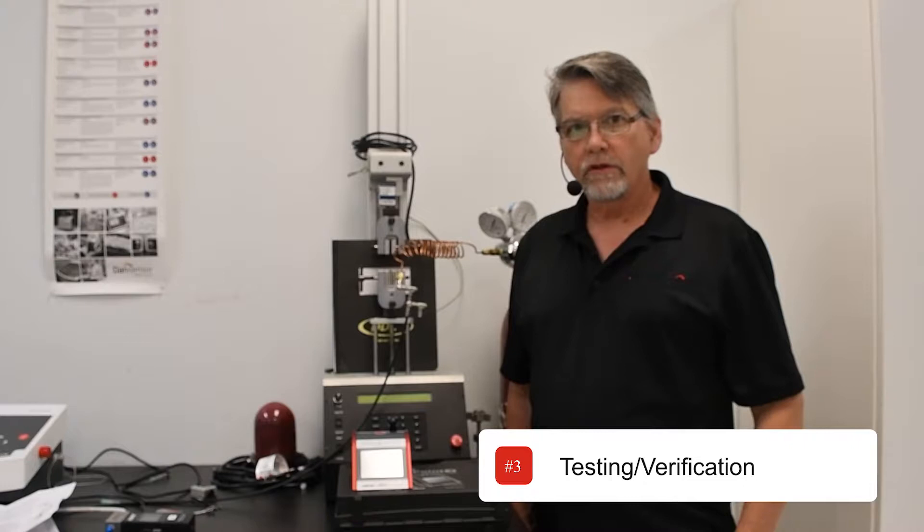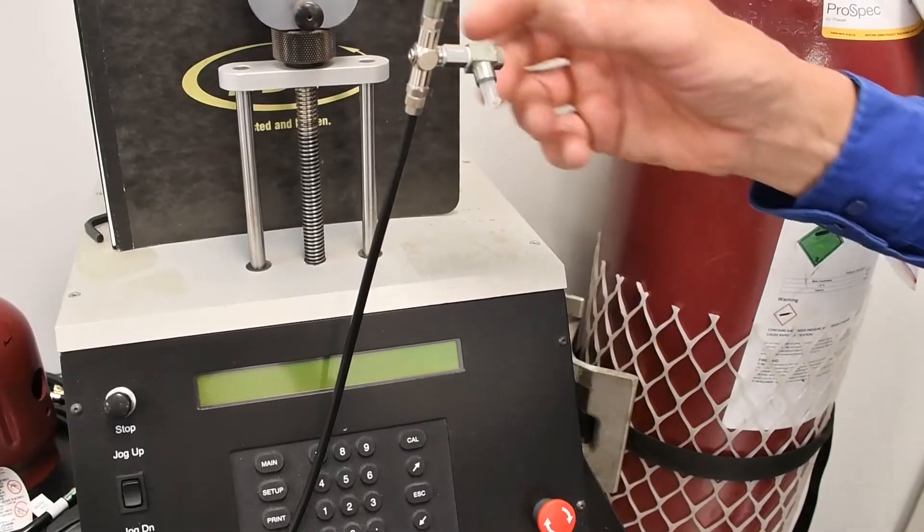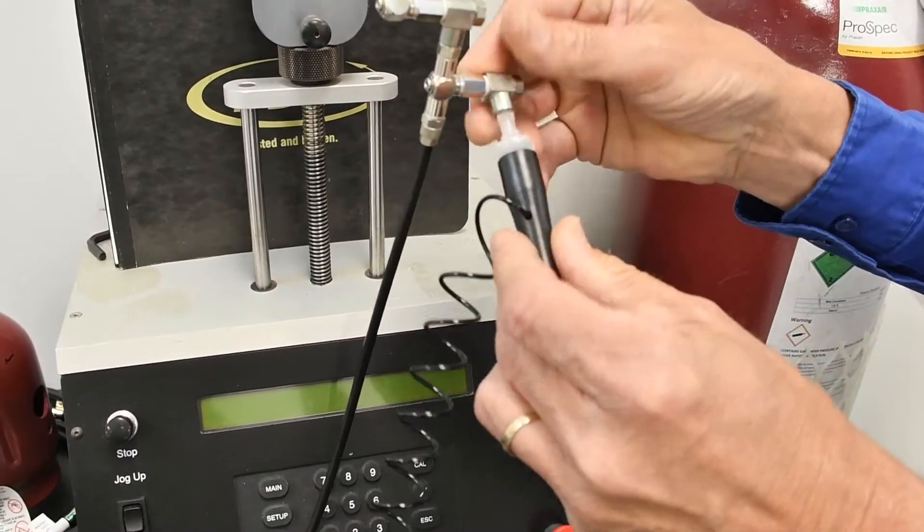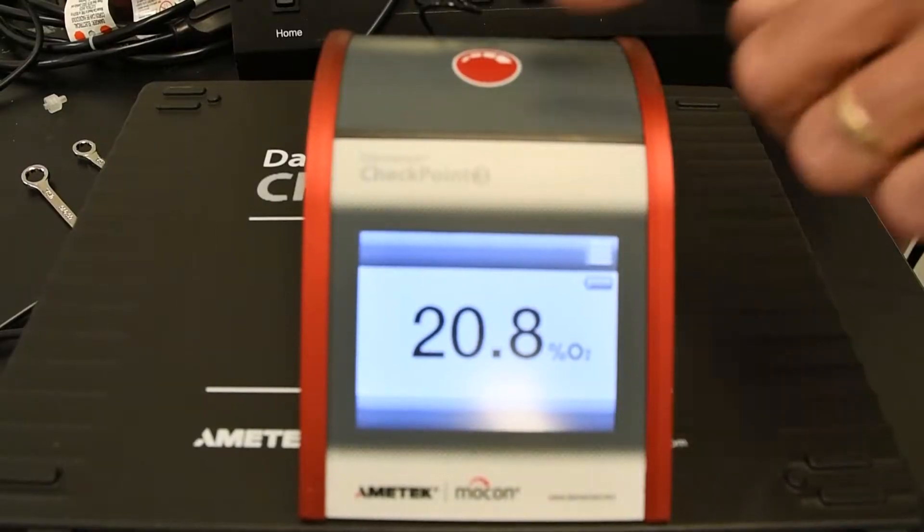Now I'll demonstrate the verification process for the Checkpoint 3. Connect the measurement hose from the instrument to the pressure relief kit. Take a measurement with your instrument.